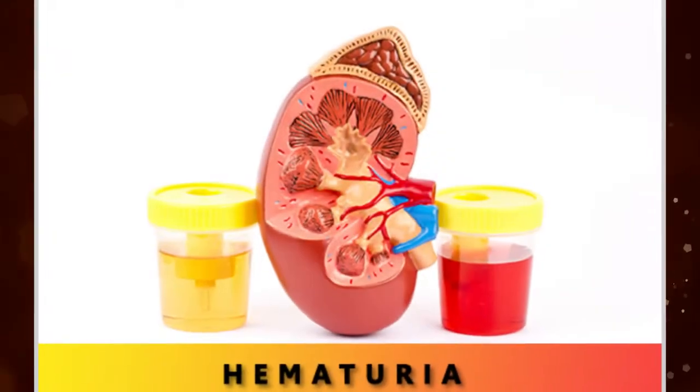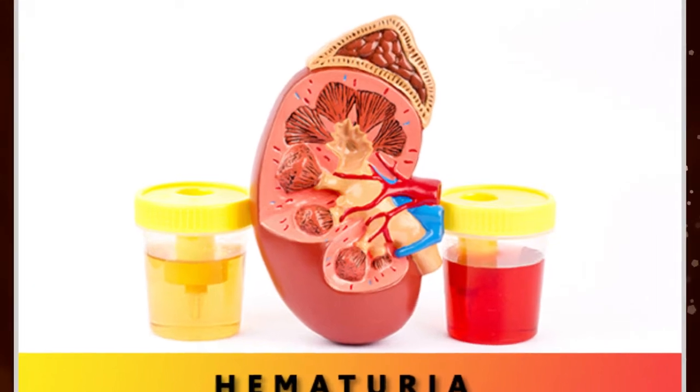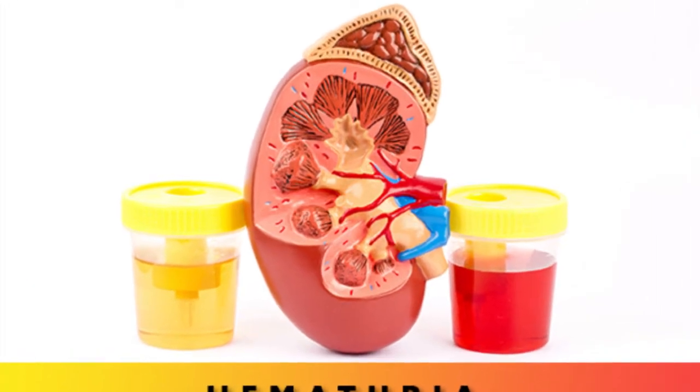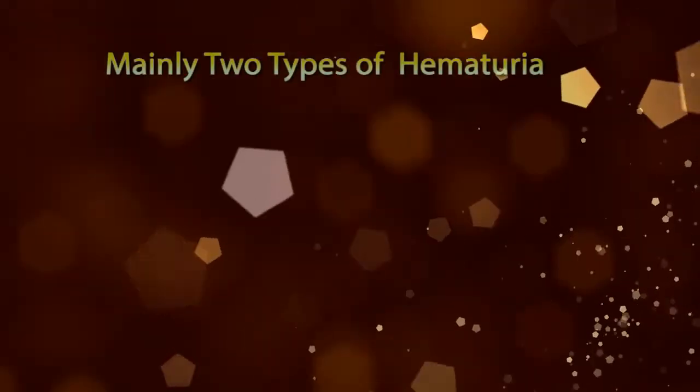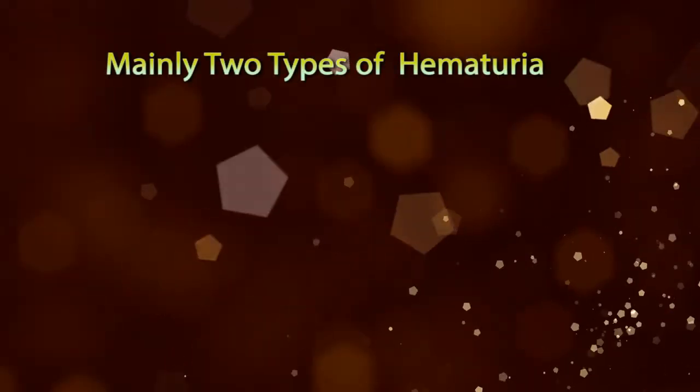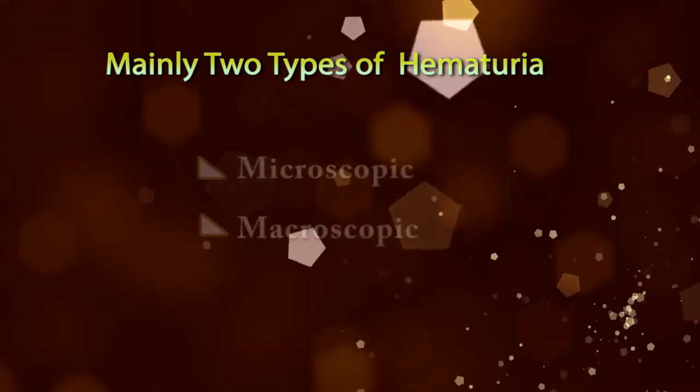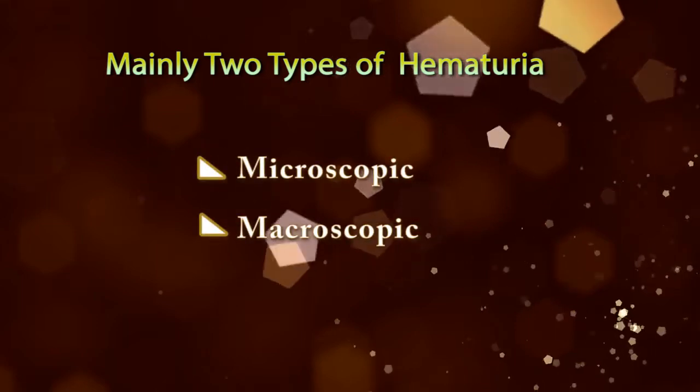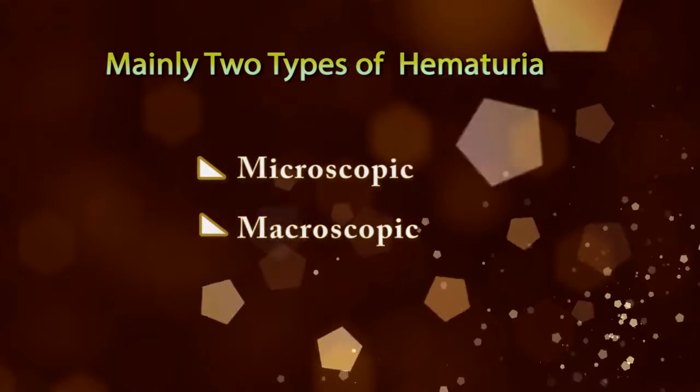Red blood cells in urine, medically termed as hematuria. There are mainly two types of hematuria: microscopic and macroscopic.